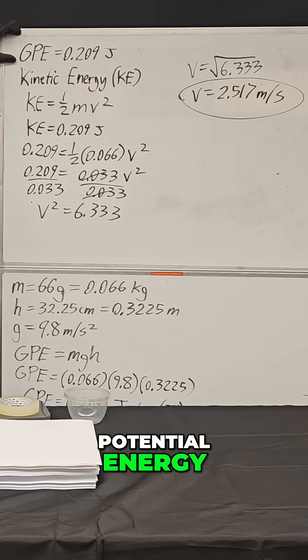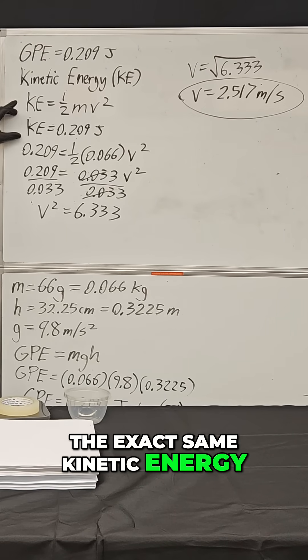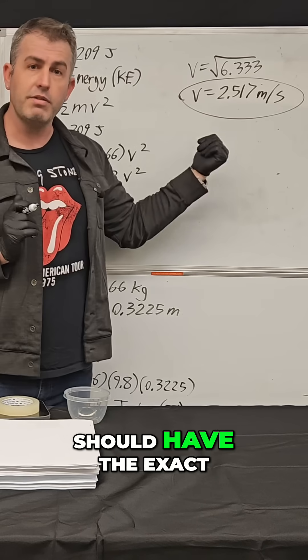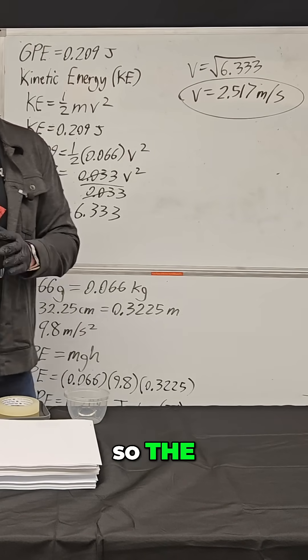Which means they all should have ended with the exact same kinetic energy, which means they all should have the exact same velocity at the bottom of the ramp. So the answer to our initial question in this video is all the marbles have the same velocity down here.